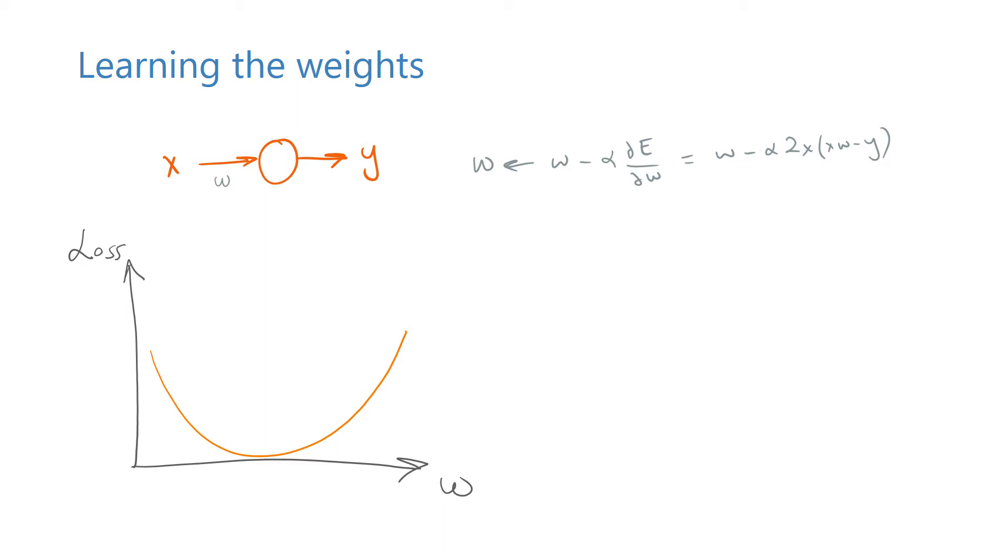The derivative simply tells us the slope of the loss function at a given point. For example, if the weight is at this point where the slope is positive, then we need to decrement the weight. If the weight is here on the opposite side, then the slope becomes negative, so we need to move right to move towards the value that minimizes the loss.